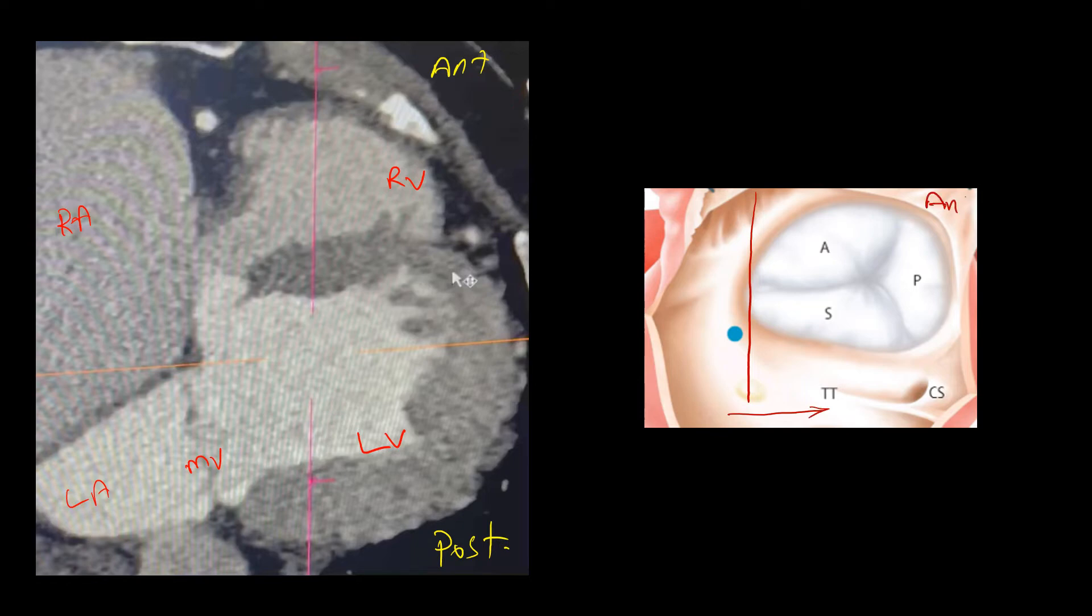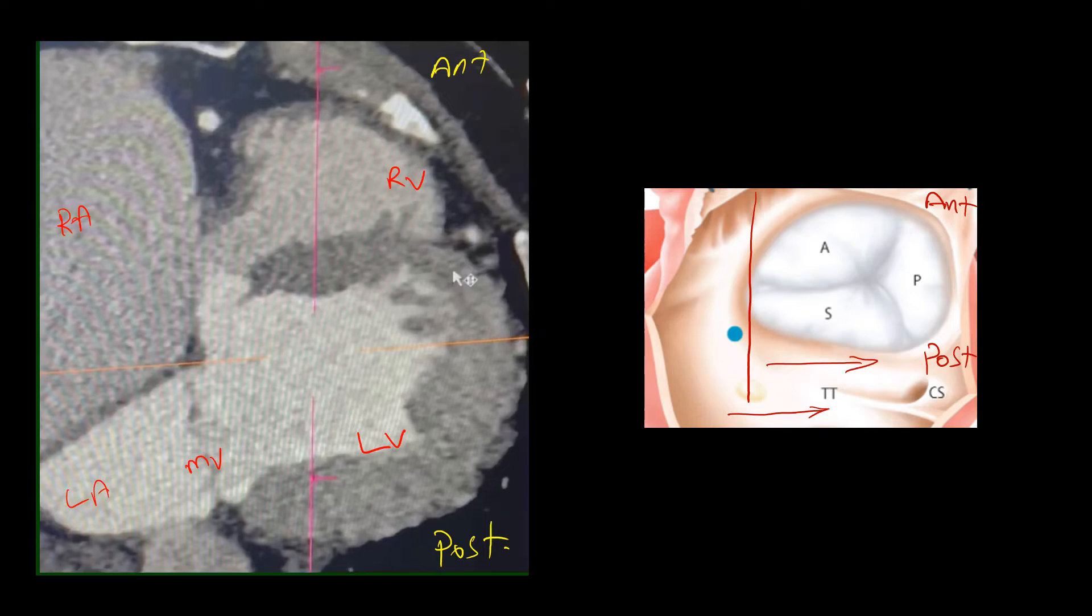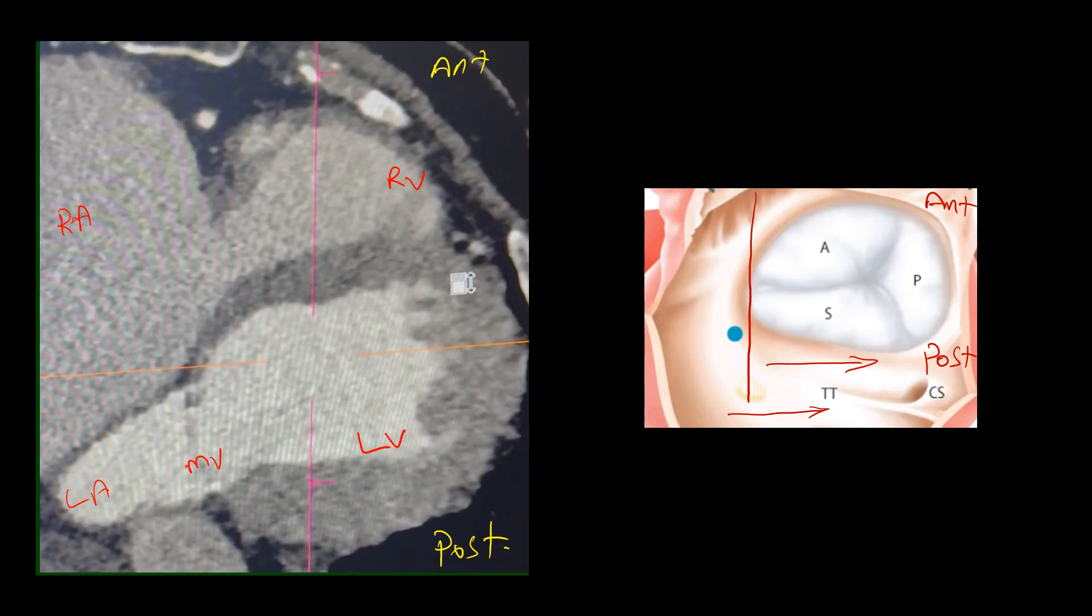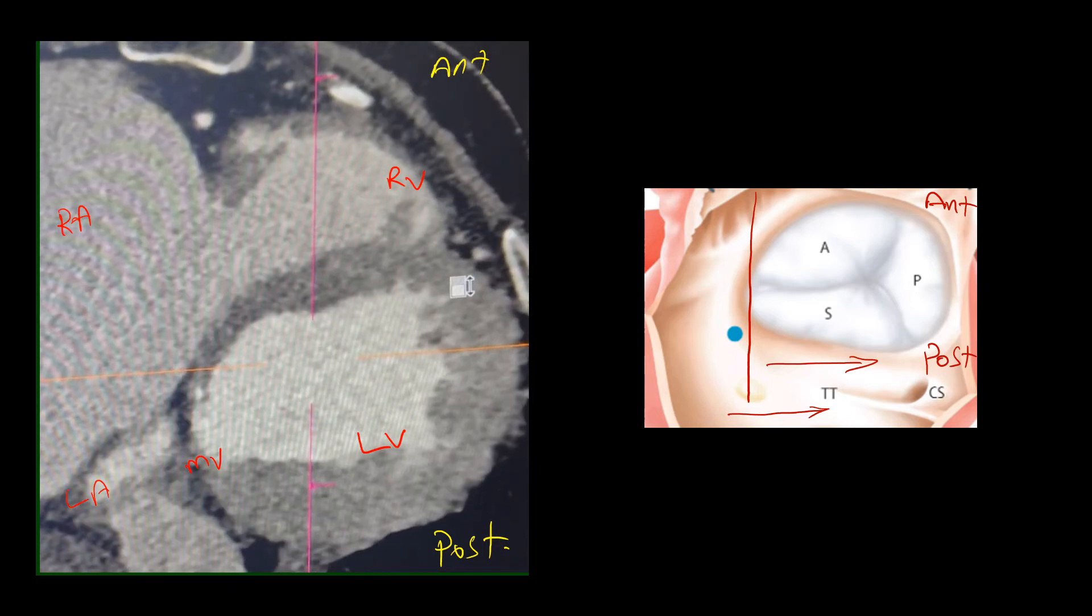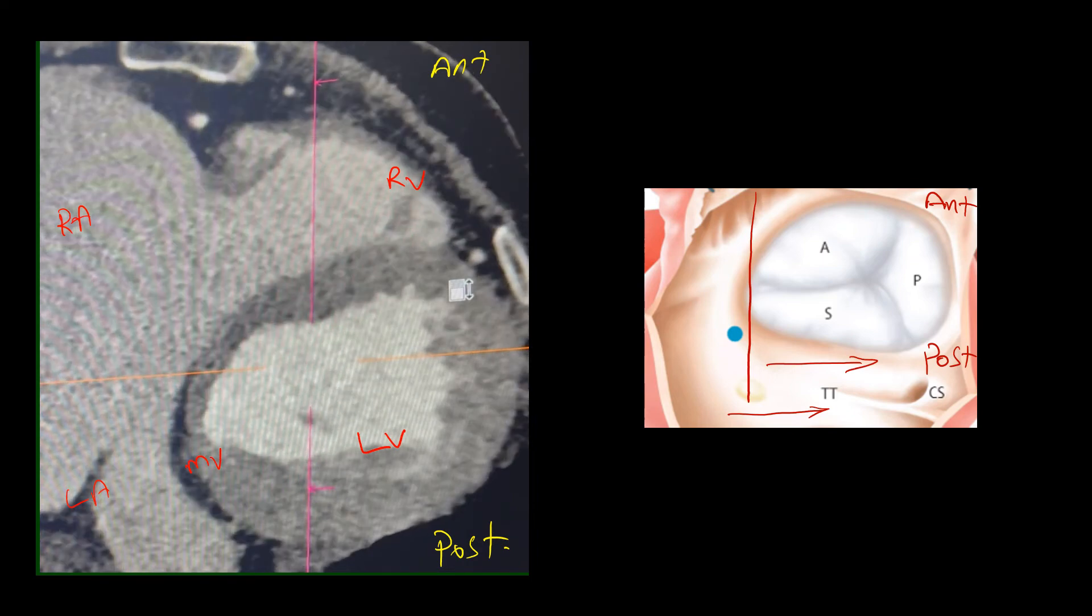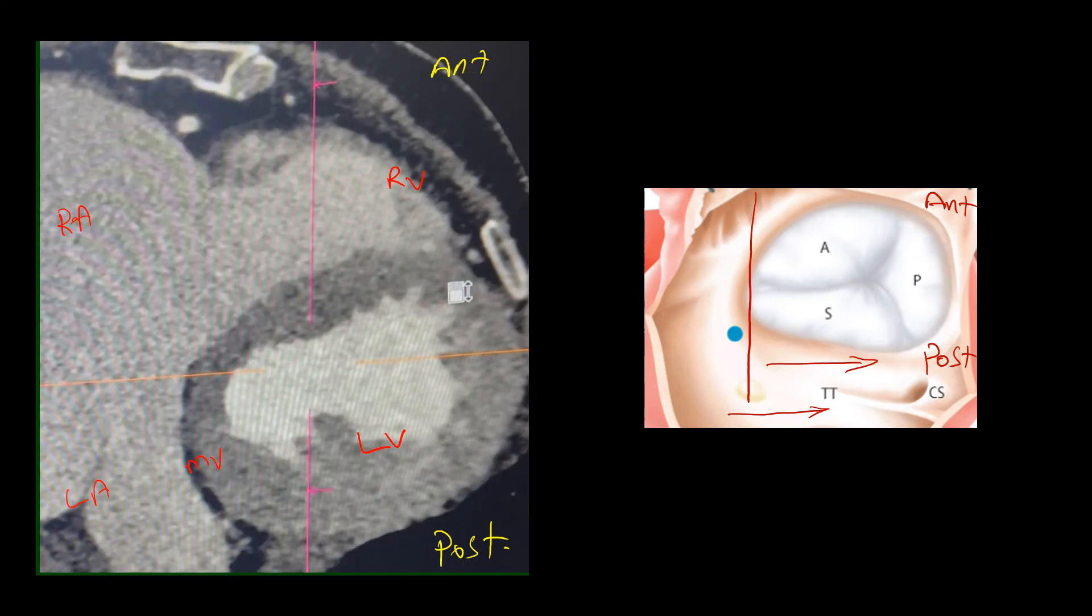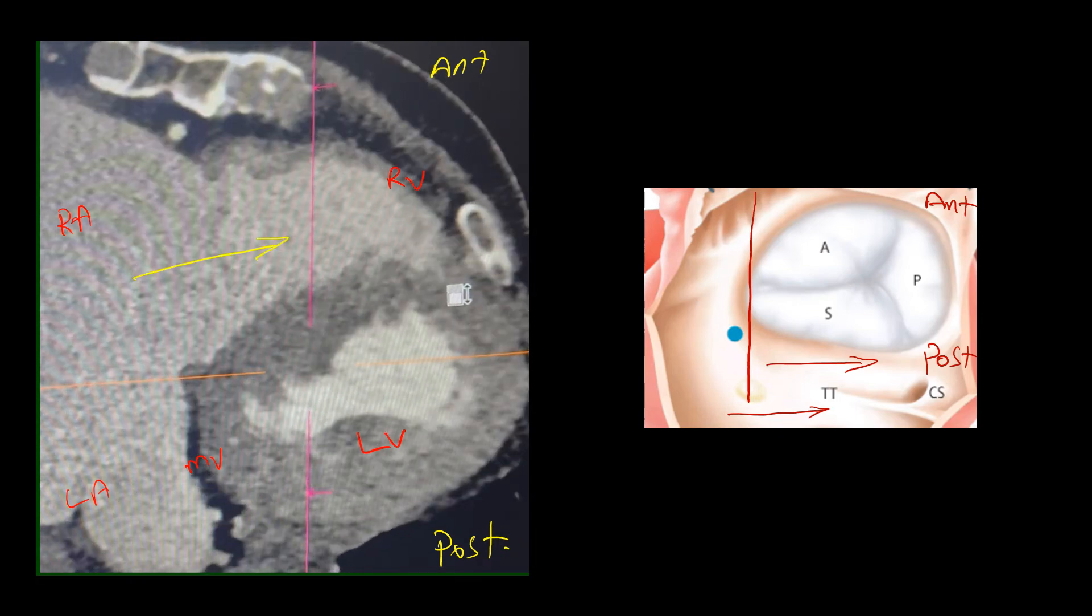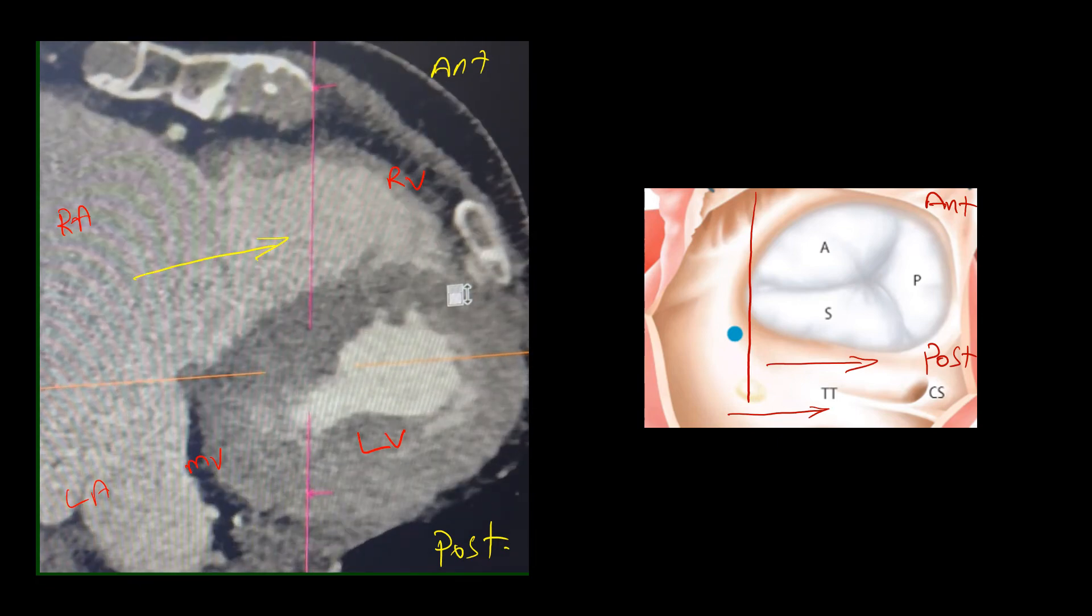Remember, this is the anterior section, and this is the posterior section, and we will be scrolling towards the posterior valve. If I start the video, now we are slowly moving towards the posterior valve. Here you can see there is no sign of the pacemaker lead, which should ideally be situated in the middle of the tricuspid valve.